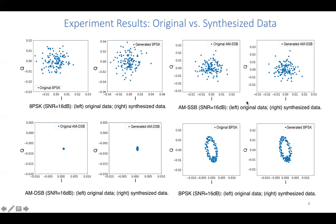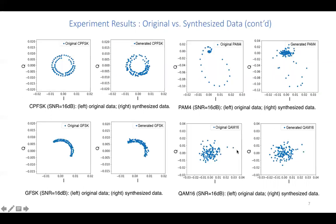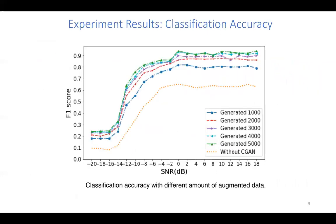It is easy to find that the generated modulation data is similar to the original modulation data across 11 modulations. We also show the classification accuracy, and the generated dataset achieves better performance than the original dataset.